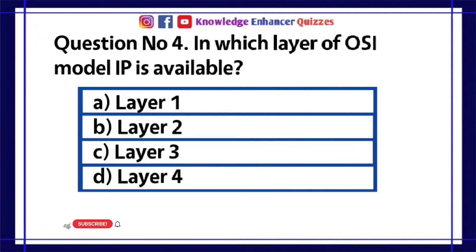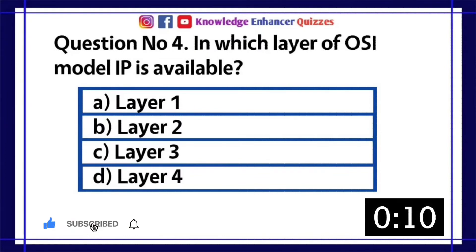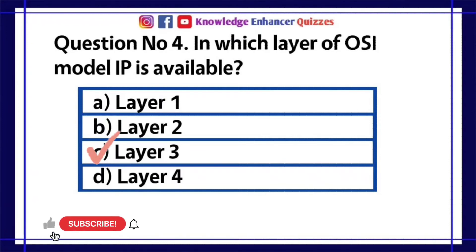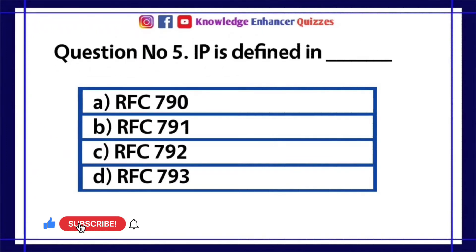Question number 4. In which layer of OSI model is IP available? A. Layer 1. B. Layer 2. C. Layer 3. D. Layer 4. Option C is the right answer.